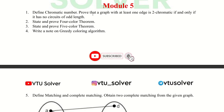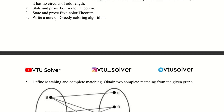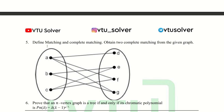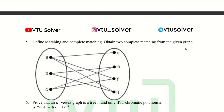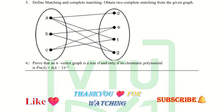Module 5 — first question: define chromatic number and prove that a graph with at least one edge is 2-chromatic if and only if it has no circuit of odd length. The second question: state and prove the four-color theorem. The third question: state and prove the five-color theorem. The fourth question: write a note on the greedy coloring algorithm. The fifth question: define matching and complete matching, and obtain two complete matchings from the given graph.